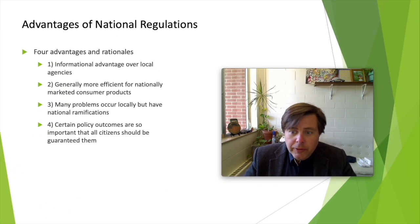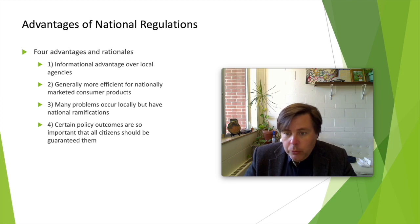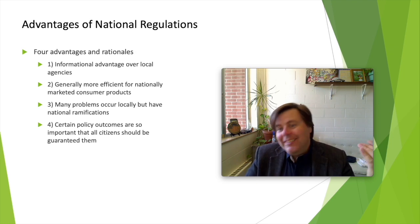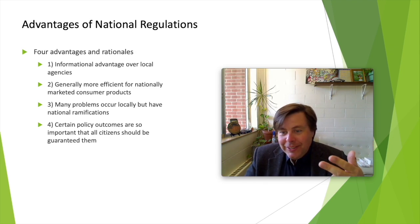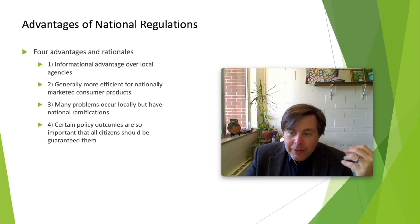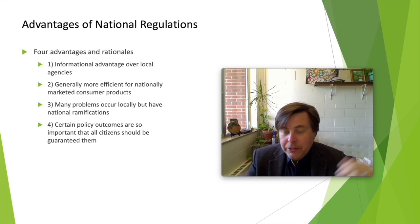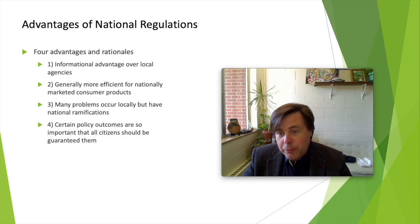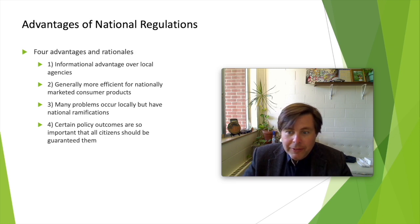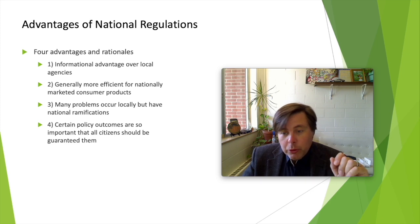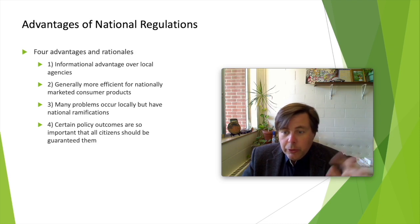Why wouldn't we always have local regulations? Federal or national regulatory agencies are going to be better staffed and better funded just because of the size of funds available to them, and they're almost certainly going to have information advantages over smaller regulatory agencies. They're also likely to have more effective tools for enforcement when compared to local or state regulatory authorities.